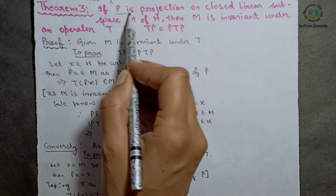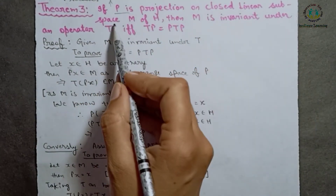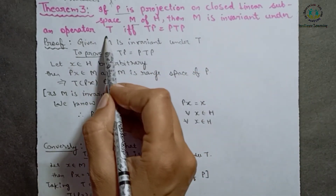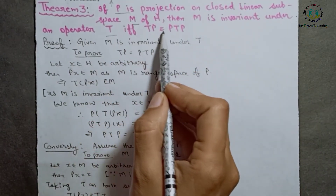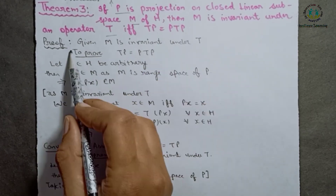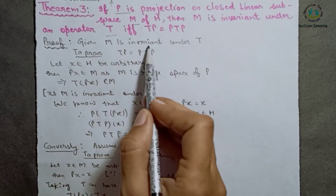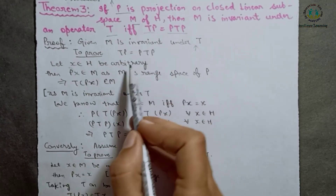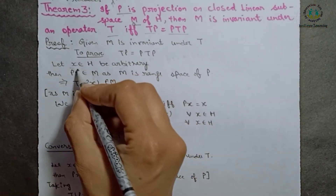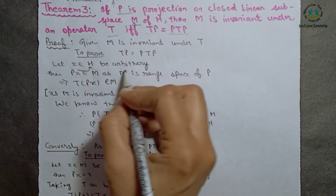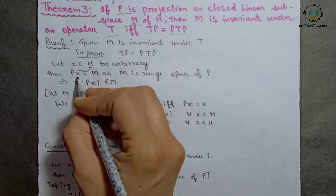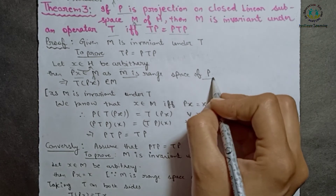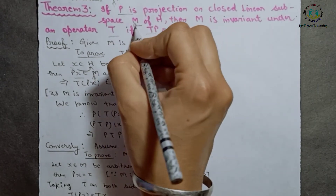Theorem 3: If P is a projection on closed linear subspace M of H, then M is invariant under an operator T if and only if TP equals PTP. Proof: First, let M be invariant under T and we will prove that TP equals PTP. For this, let x belong to H be an arbitrary element. Then Px belongs to M, since M is the range space of P.